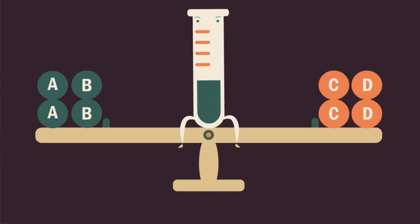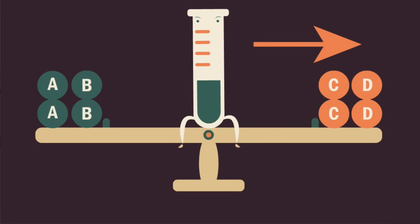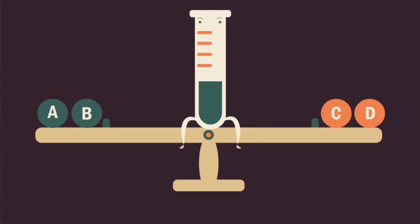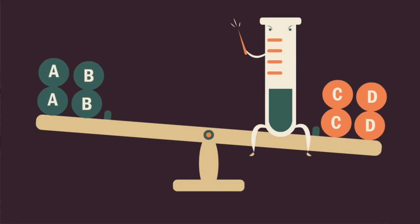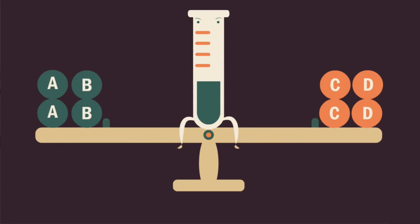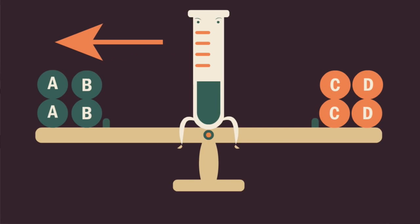If we added more C and D, the system becomes stressed and is also no longer at equilibrium. So to counteract the stress, the system forms more A and B. Therefore the equilibrium shifts to the left.